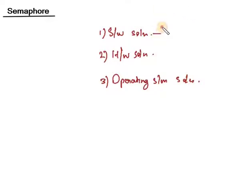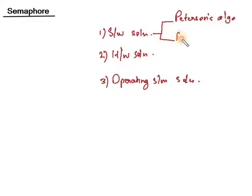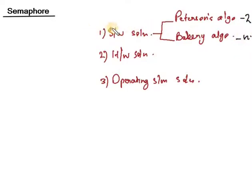Different types of software solutions for the critical section problem are Peterson's algorithm and the Bakery algorithm. One thing you should bear in mind: Peterson's algorithm is for two processes, and the Bakery algorithm is for n processes. Software solutions include Peterson's algorithm for two processes and Bakery algorithm for n processes.